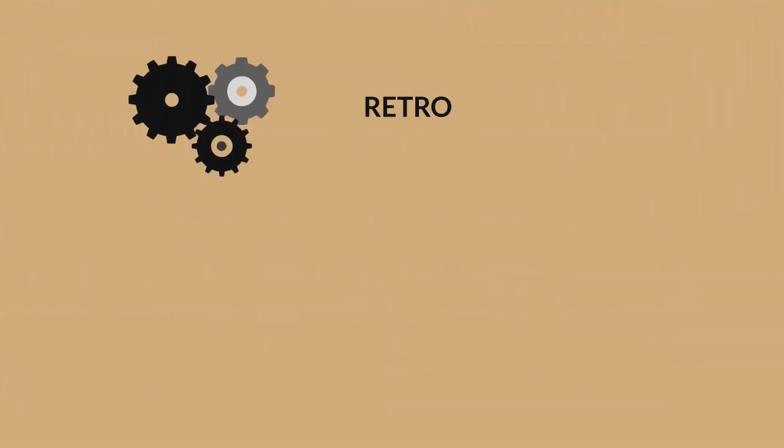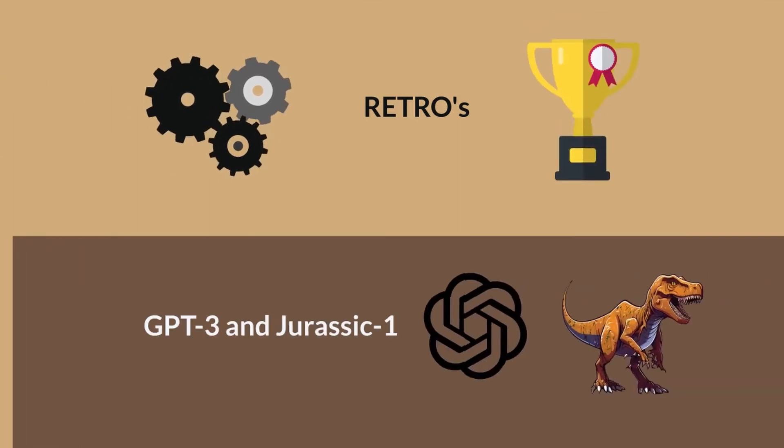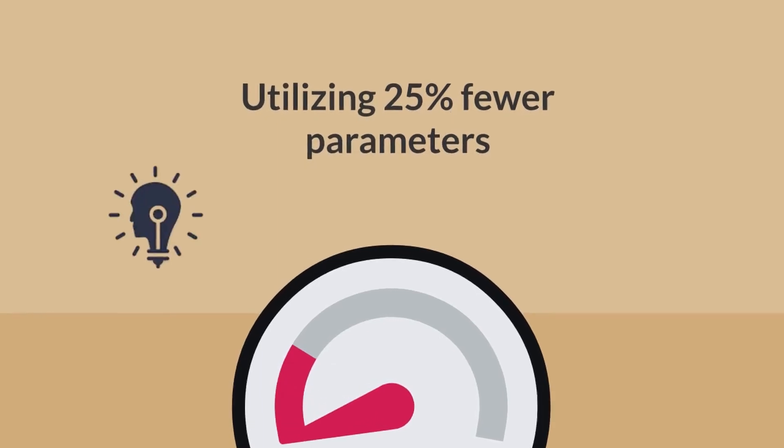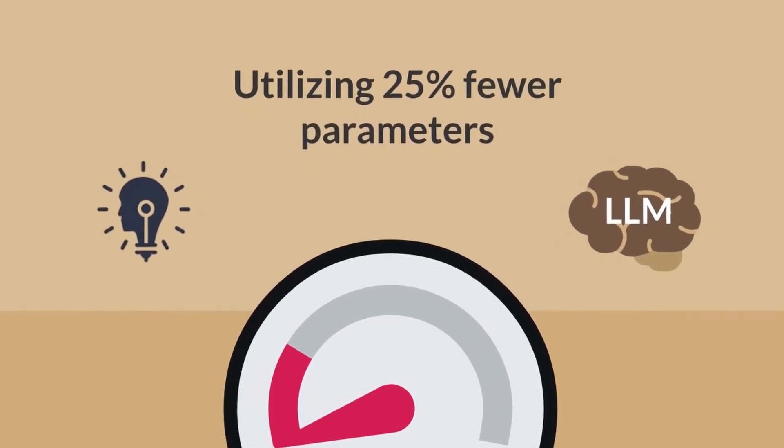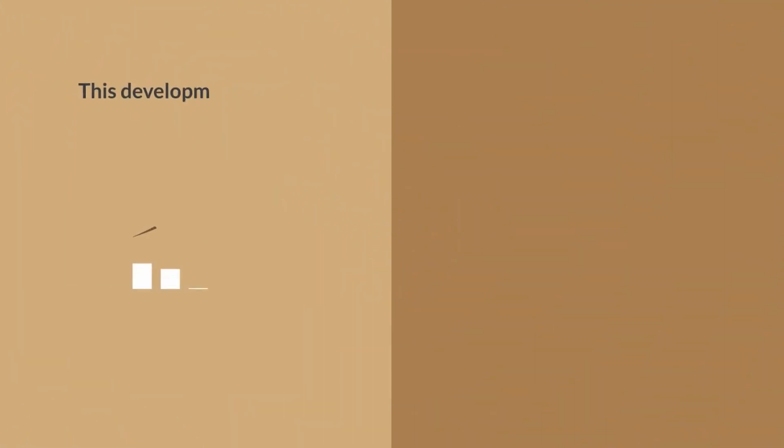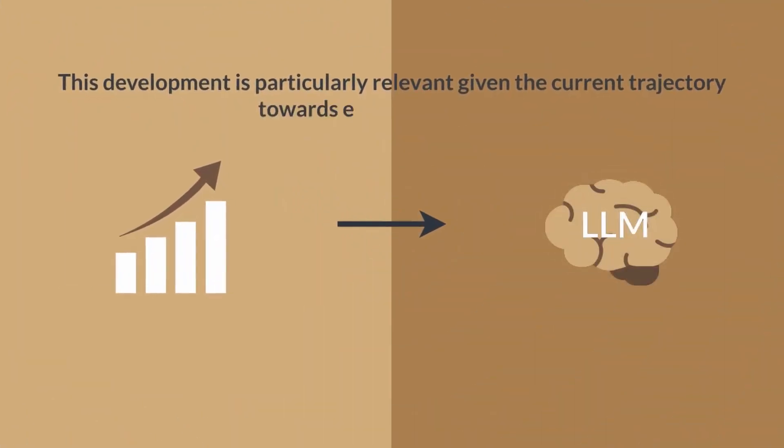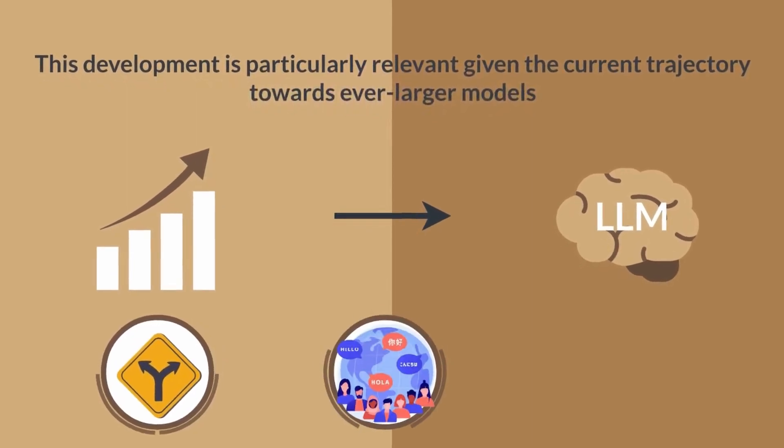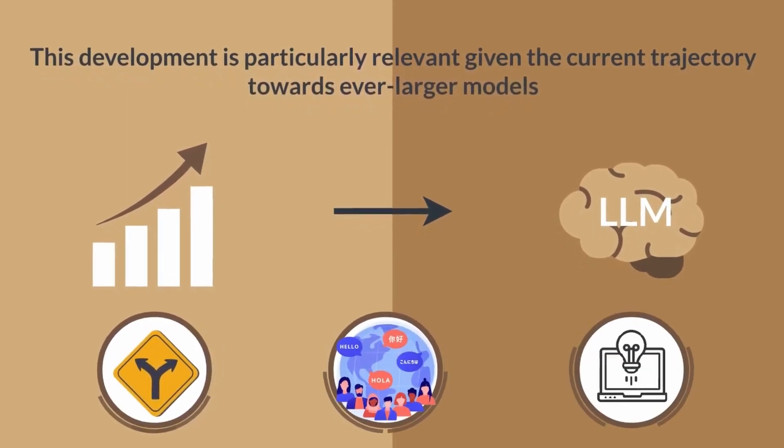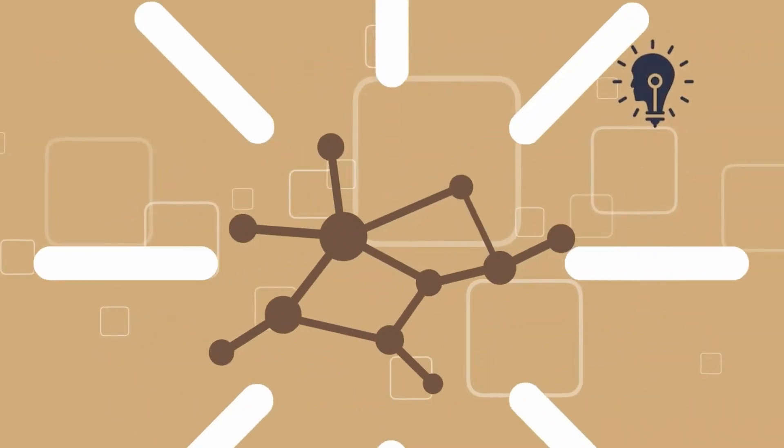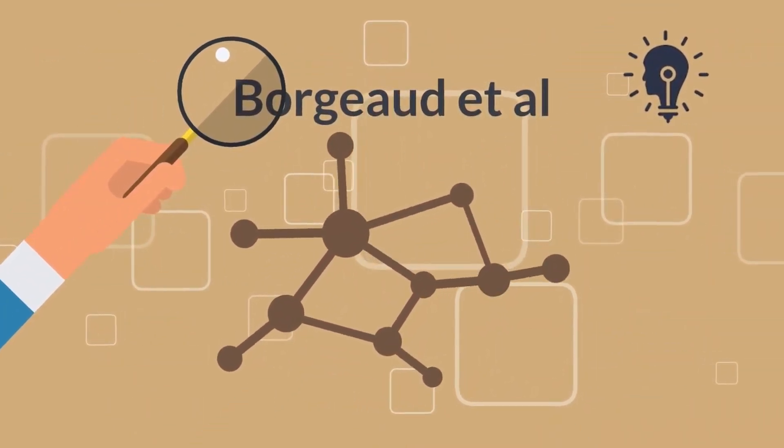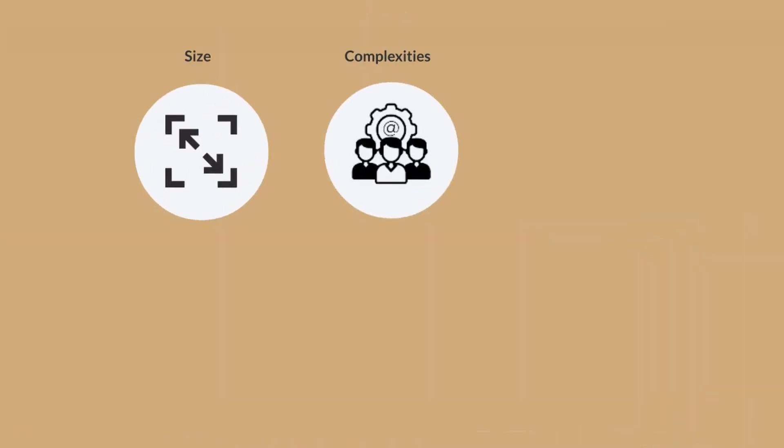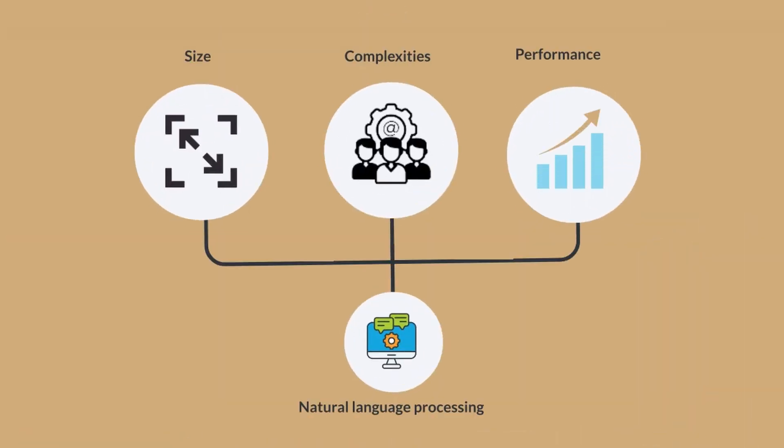Retro's efficiency and performance, achieving results comparable to GPT-3 and Jurassic-1, while utilizing 25% fewer parameters, demonstrate its potential to inform the design of more parameter-efficient LLMs. This development is particularly relevant given the current trajectory towards ever-larger models, suggesting alternative pathways to achieve advanced linguistic capabilities without proportionately increasing computational demands. The methodology and findings of Borgeaud et al. contribute valuable insights into the ongoing discourse on optimizing the interplay between size, complexity, and performance in the field of natural language processing.